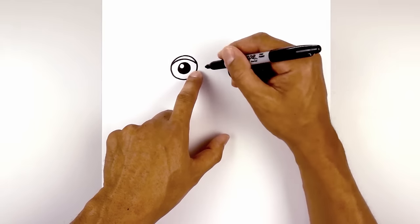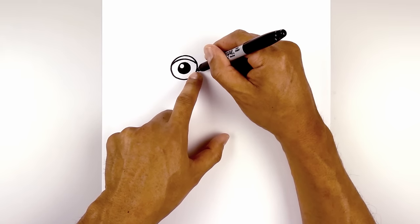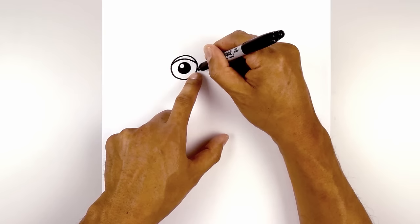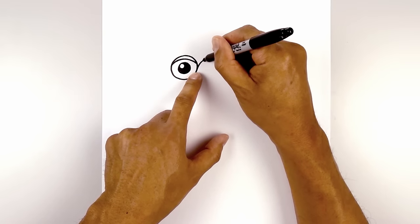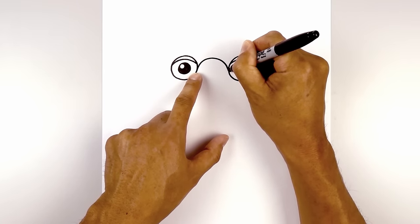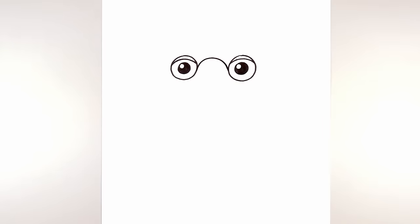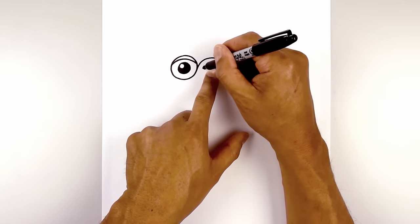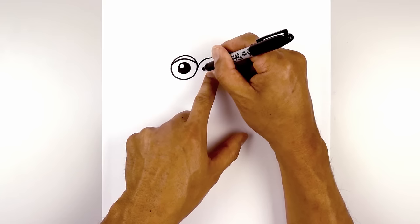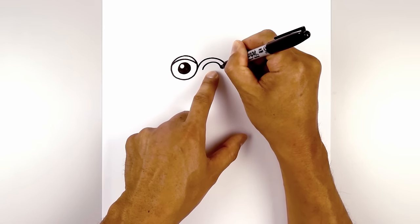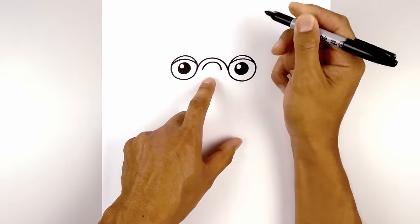From the inside edge of the left eye we draw a curve that goes up and then back down on the right side, all the way to the top and then bring that down. Now we're going to step down and draw the bridge of the nose. Starting from the left we're going to draw a half circle, going up and then back down on the right.